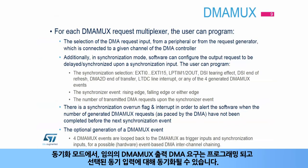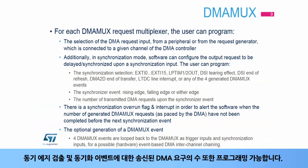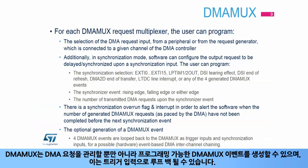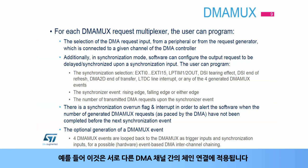In synchronization mode, any DMA MUX output DMA request can be synchronized with respect to a programmed and selected synchronization input. The synchronization edge detection and the number of transmitted DMA requests upon the synchronizer event are also programmable. As well as managing DMA requests, DMA MUX can also generate programmable DMA MUX events, which may be looped back as trigger inputs — for example, for transfers chaining between different DMA channels.